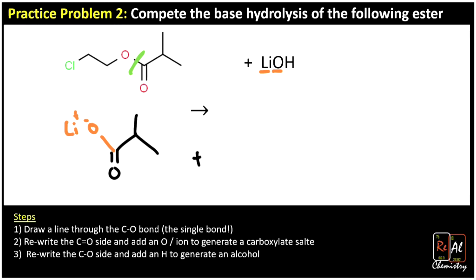And now we copy the other side of the molecule to get our alcohol. So we have chlorine up to a carbon, down to a carbon, and then up to an oxygen. And the hydrogen from our lithium hydroxide comes down here to complete that alcohol. So that's predicting the products for a base hydrolysis of an ester.